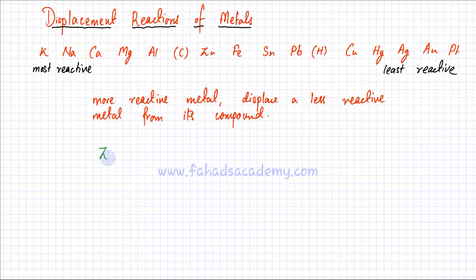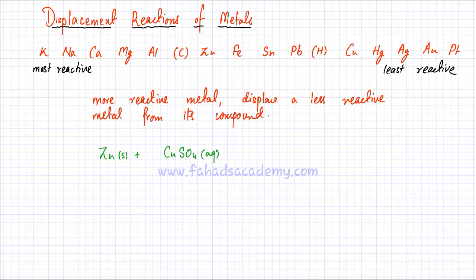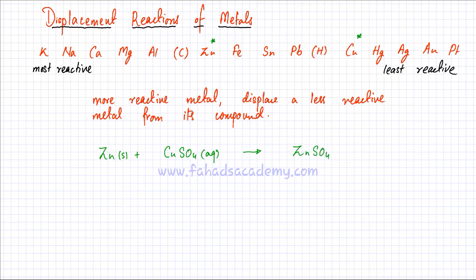For example, if I have zinc reacting with copper sulfate — copper sulfate is in aqueous state and zinc is a solid metal. If you look at the reactivity series, zinc is more reactive than copper. So zinc would displace copper because zinc is more reactive. Zinc takes away the SO4 sulfate ion and bonds with it, forming zinc sulfate, while copper is left alone.